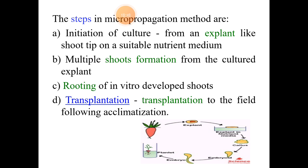First, an explant is selected, sterilized, and placed on a suitable nutrient medium like MS media. Later, shoot formation is induced followed by root formation using plant growth hormones. Tiny plantlets are then obtained, which are later transferred to the field.